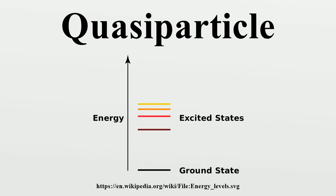Therefore, using quasi-particles and collective excitations, instead of analyzing 10^18 particles, one needs to deal with only a handful of somewhat independent elementary excitations. It is therefore a very effective approach to simplify the many-body problem in quantum mechanics. This approach is not useful for all systems, however. In strongly correlated materials, the elementary excitations are so far from being independent that it is not even useful as a starting point to treat them as independent.